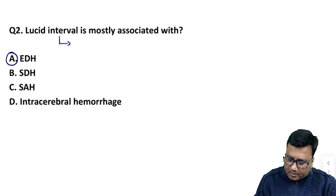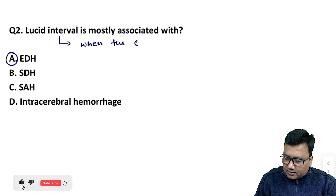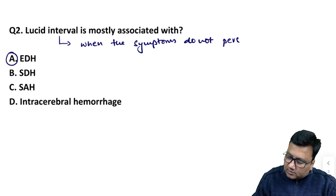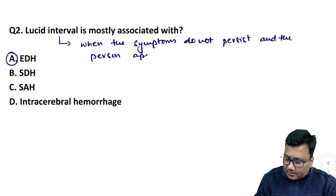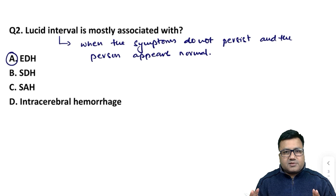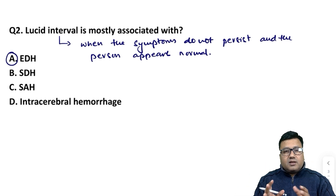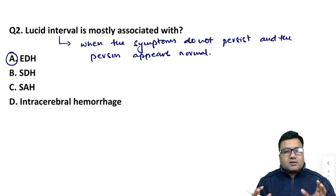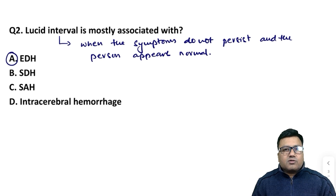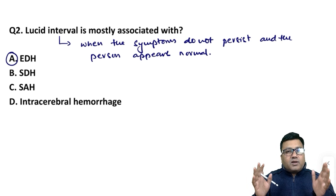What is lucid interval? It is a time period when symptoms do not persist and the person appears normal — ऐसा time period जब symptoms persist नहीं करते और person normal appear करता है। EDH में ऐसा एक बार हो सकता है: after the initial trauma the person may become disoriented or lose consciousness, then become normal once, only to go back into loss of consciousness as the EDH develops more and more। EDH की case में एक बार lucid interval हो सकता है जब वो normal behavior show करे।